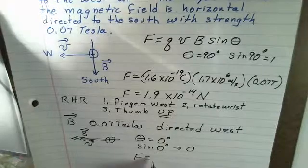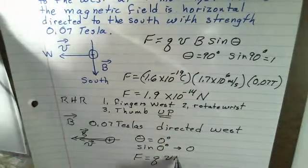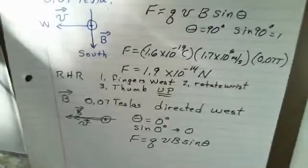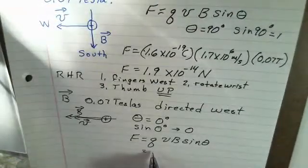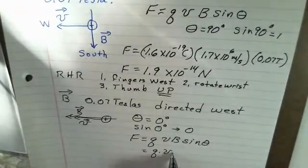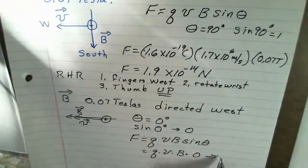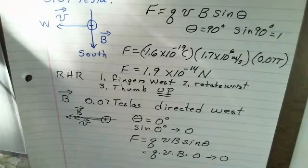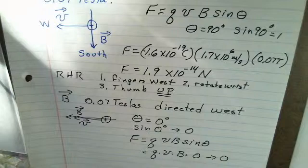If I evaluate the sine of 0 degrees, do that in a calculator, you'll find it is 0. So I have a situation, force is q, v, b, sine theta, and in this problem, the sine theta factor is a 0. Consequently, the force is 0. There is no magnetic force if the charged particle is moving in the same direction as the magnetic field.